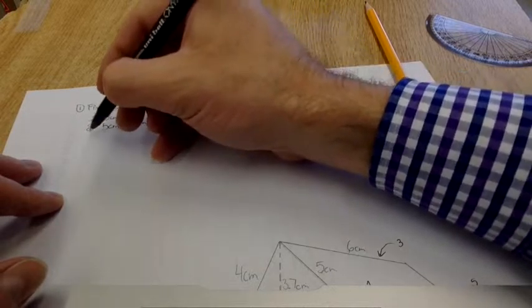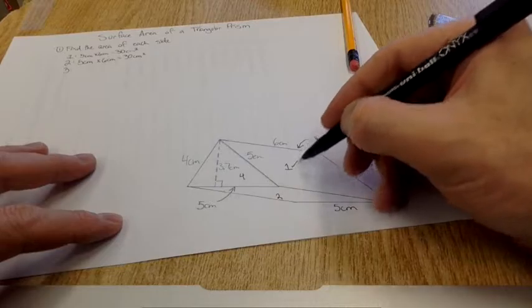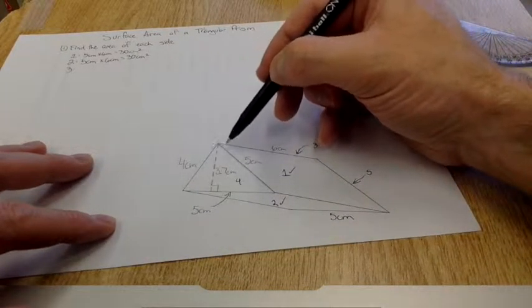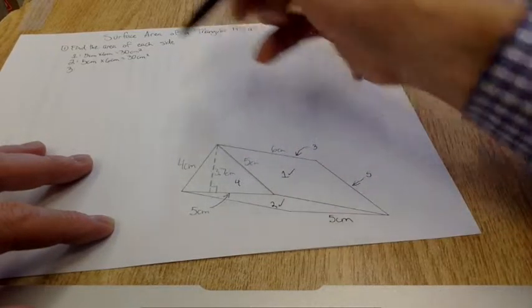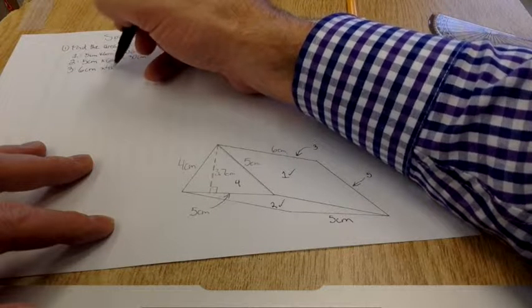This is also 6 centimeters times 5 centimeters, so also equals 30 centimeters squared. So I have that one and I have that one. Side three is the back, so it is this side along here and that side along there, which is 6 centimeters times 4 centimeters, equals 24 centimeters squared.